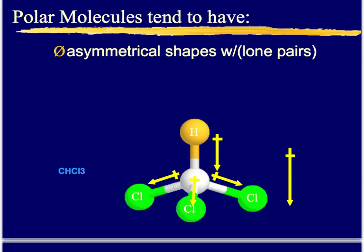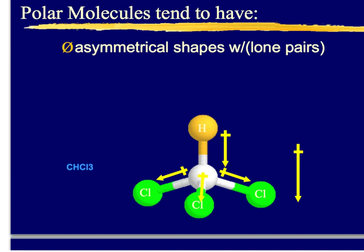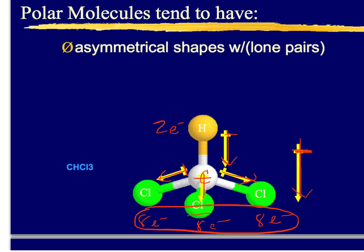Don't let the shape fool you. Sometimes you need to look at how many electrons are around each atom. Hydrogen generally has two electrons, but there are eight electrons around each of the chlorines. Hydrogen shares with carbon, so the dipole moment of the hydrogen-carbon bond moves toward carbon. Then from carbon to chlorine, chlorine is much more electronegative and pulls electrons away from carbon, so the individual dipole moments are moving outward. The overall distribution is very positive at the top and very negative at the bottom — this is definitely a polar molecule.